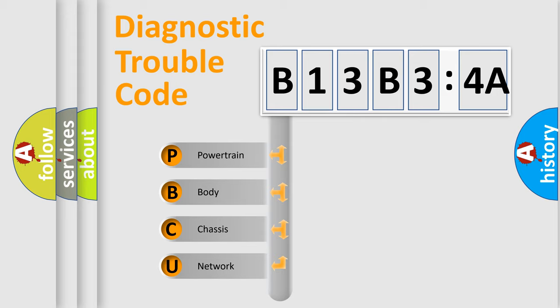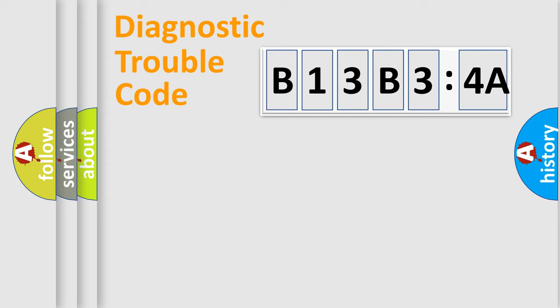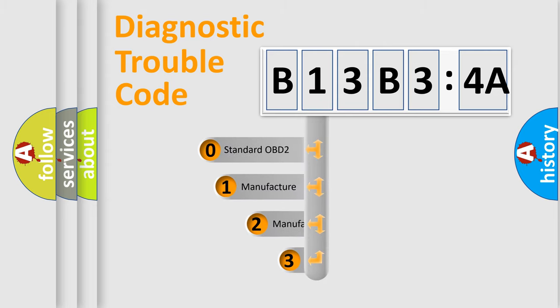We divide the electric system of automobile into four basic units: Powertrain, Body, Chassis, and Network. This distribution is defined in the first character code.